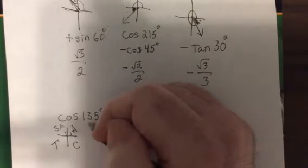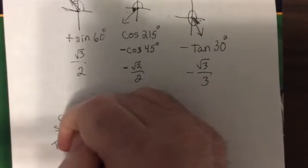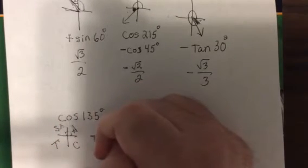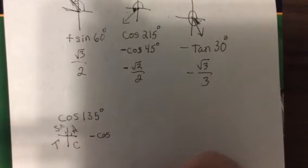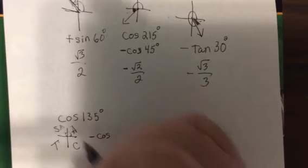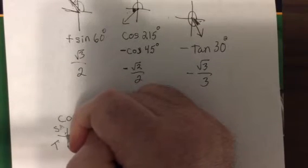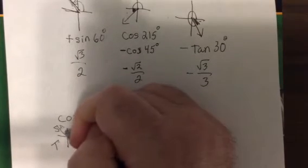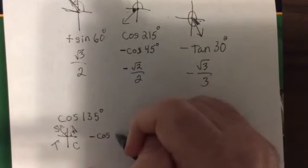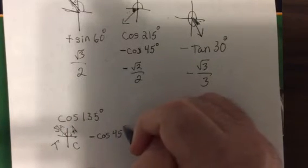And the reference angle, let's see, that's right here, it's 45 degrees short of the 180, so 45 degrees. I look on my chart, so it's negative square root of 2 over 2.